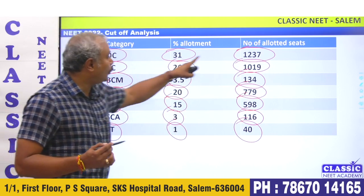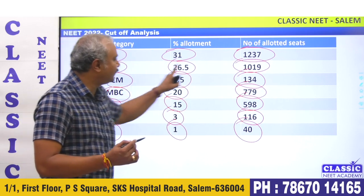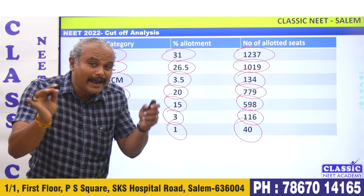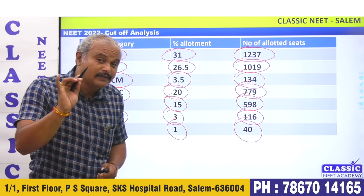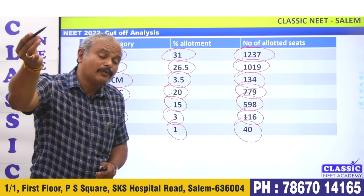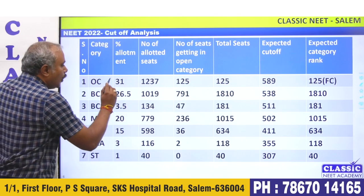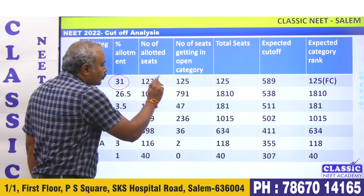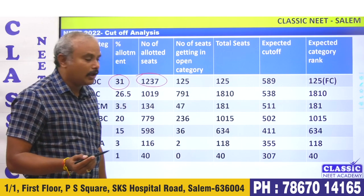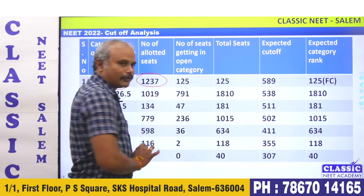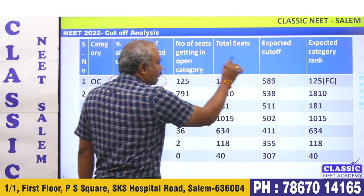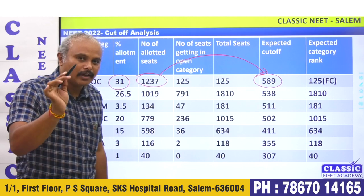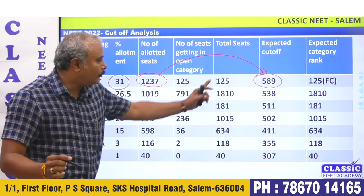If you look at BC open category, where is BCM? Now we are doing a purely rank list analysis. For example, OC is 31% — for 10 to 30 seats, if we want to say these 125 seats, what is the cutoff? The open category cutoff rank is 589.